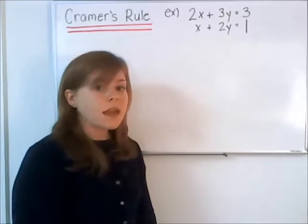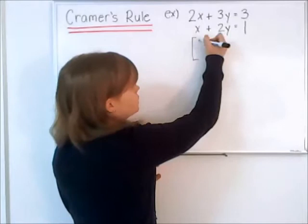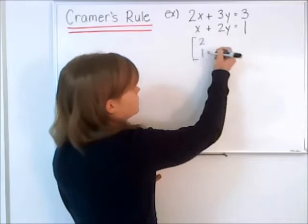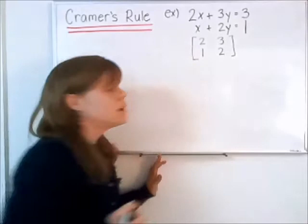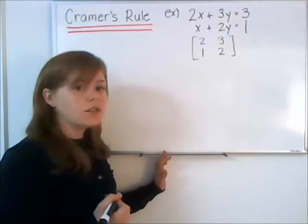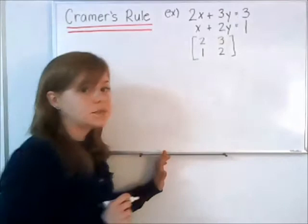Cramer's Rule is an application where we have a system of equations and we put the coefficients into the corresponding matrix. Here we would take 2 and 1 for our x, and 3 and 2 for our y. What Cramer's Rule allows us to do is determine x and y using the determinants of certain variations of this matrix.